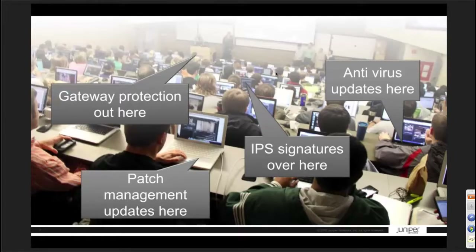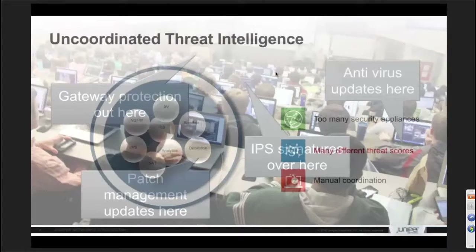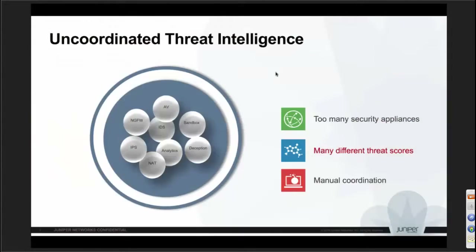For example, a particular threat coming from a guest user versus the same alert from a finance user can have very different implications. It gets very difficult because there are too many alerts and threat scores that are pretty much uncoordinated. The only way today is to have a SIEM and manually figure out what to do.